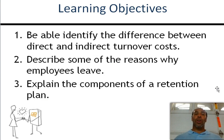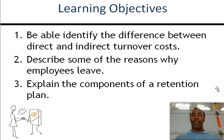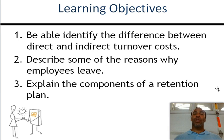Learning objectives as always. First, be able to identify the difference between direct and indirect turnover costs. We'll look at some turnover costs and talk about what costs can be directly attributed to a person leaving versus those that are indirect but still affect the organization. Number two: describe some of the reasons why employees leave — conflict with the manager, fed up with work, family changes, relocation, anything.